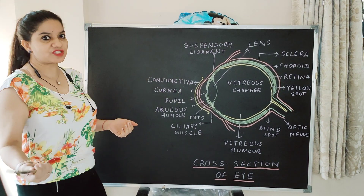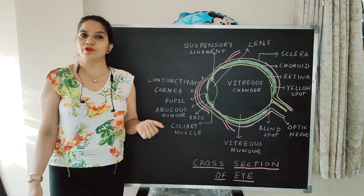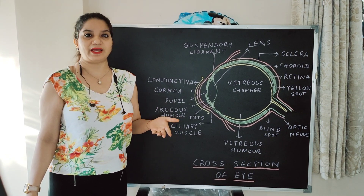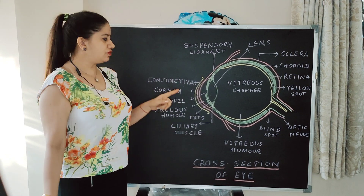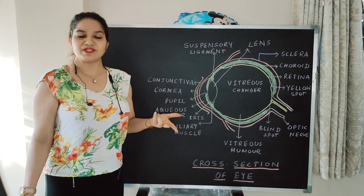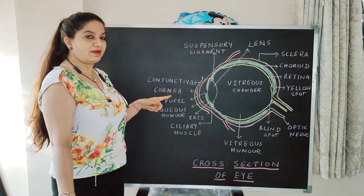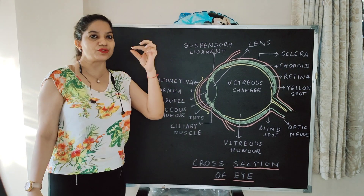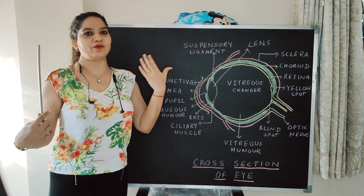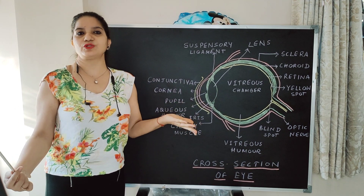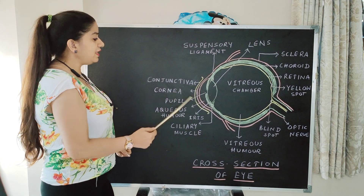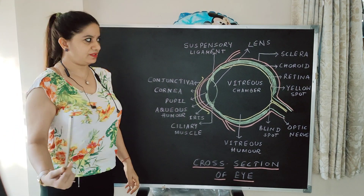Sclera in front becomes cornea, which is visible through a transparent layer which is conjunctiva. You must be knowing that more than 4 to 5 lakh people in India are becoming cornea blind every year. So this is the layer of the eye which can be grafted. Corneal layer can be split into 2 to 3 layers and we can give vision to 2 to 3 people. So cornea is the only layer which can be grafted.